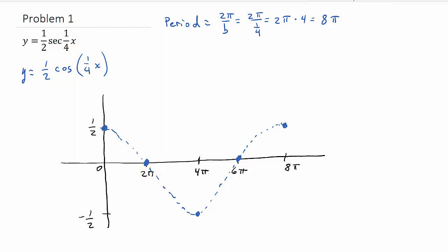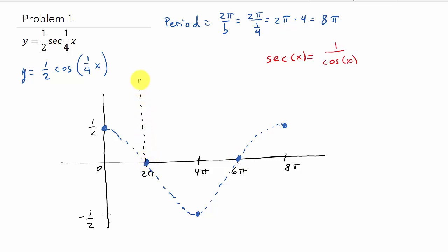Now we need our vertical asymptotes. Secant x equals 1 over cosine x, and the vertical asymptotes are where secant is undefined — that is, where cosine equals 0, because we'd have 1 over 0. Cosine is 0 at 2 pi and at 6 pi, so we have vertical asymptotes at 2 pi and 6 pi.